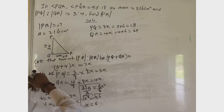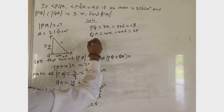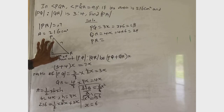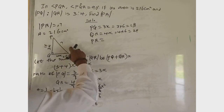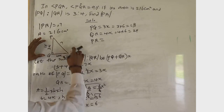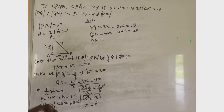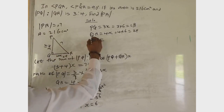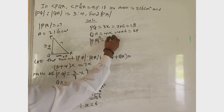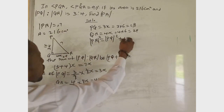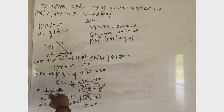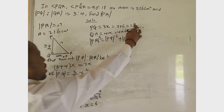Now our remaining question is to calculate side PR. We have two sides of the right-angle triangle. Using the Pythagorean theorem, the square of the largest side equals the sum of the squares of the other two sides. So PR squared equals PQ squared plus QR squared. Our PQ is 18 and our QR is 24.